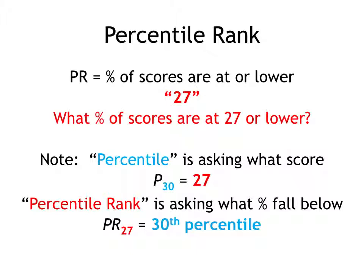If we have a score, what is the percentile rank of that score? In other words, if we have a score of 27, what portion of the scores fall at or below it? Keep the two concepts as opposites.